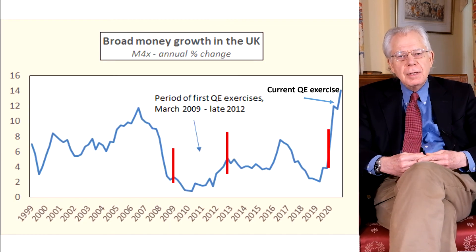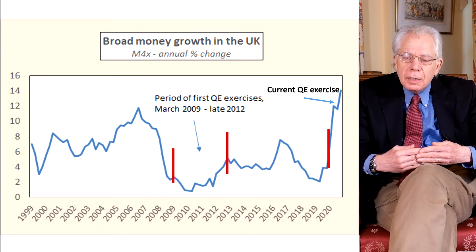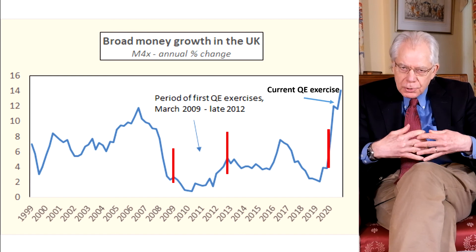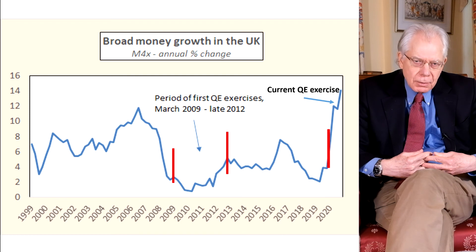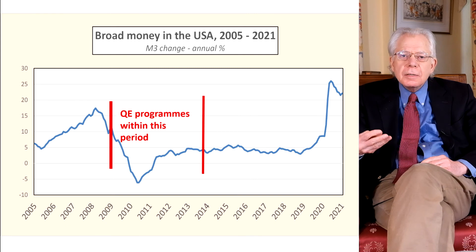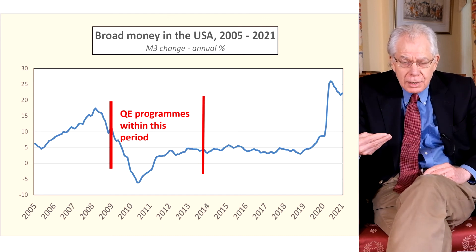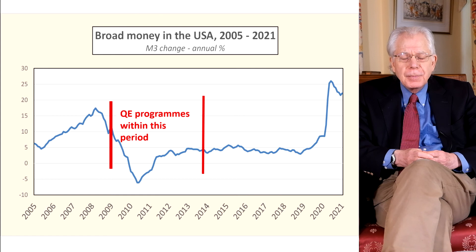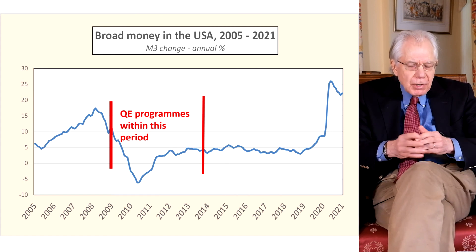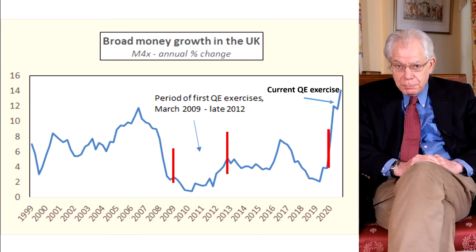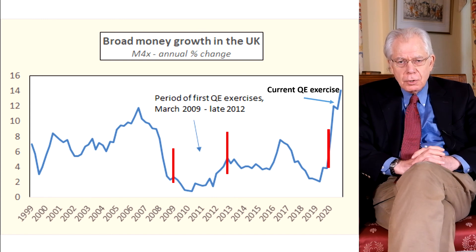What about the UK? Same story. You see the slow growth of money in the early 2010s — very slow, only 2 to 3% a year despite QE — and again because banks were restricting their loans to the private sector, cutting back on money growth. Compare that with today. In America we've had the broad money growth rate up at 26% earlier in the middle of 2020, at the moment come down a bit but still very very high. And in the UK the growth rate of broad money is now up at about 14%, way ahead of the trend growth rate of real output.